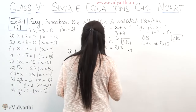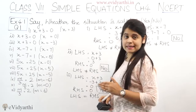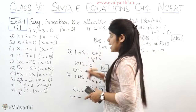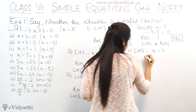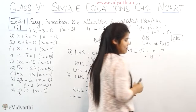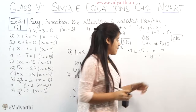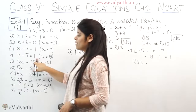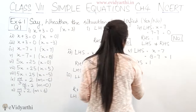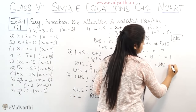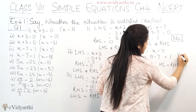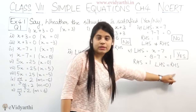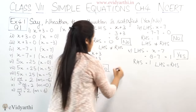In the fifth part we have the same equation: x minus 7 equals to 1. Left hand side is x minus 7. Now the x value given is 8. So 8 minus 7 is 1. RHS is also 1. LHS equals RHS, so the equation is satisfied and the answer is yes.